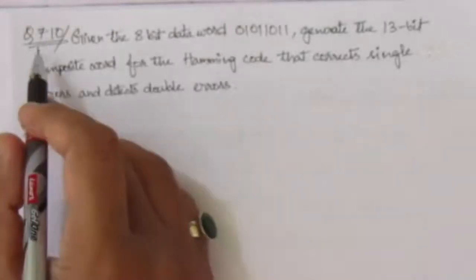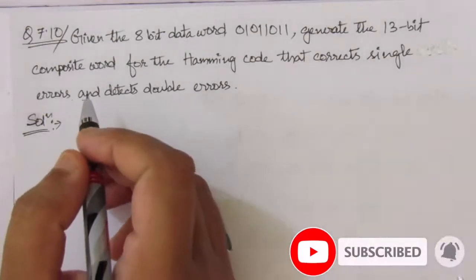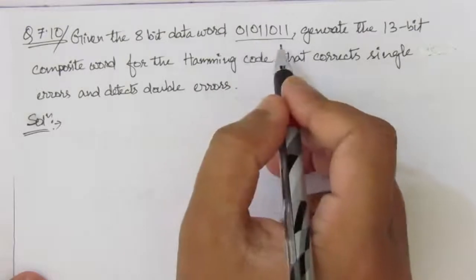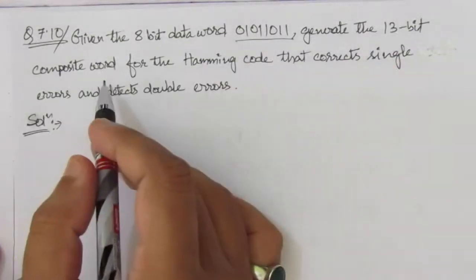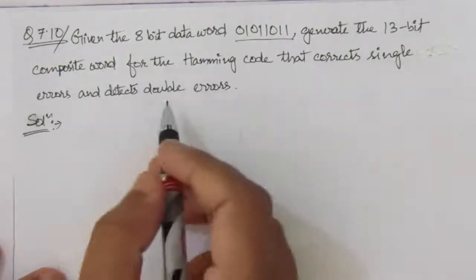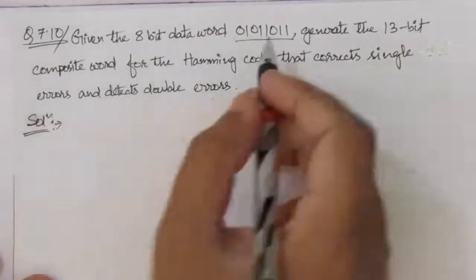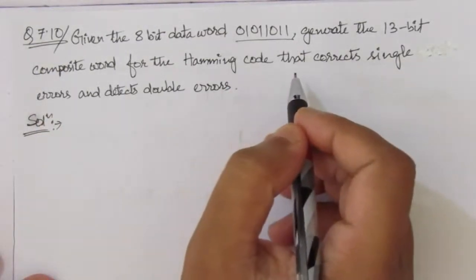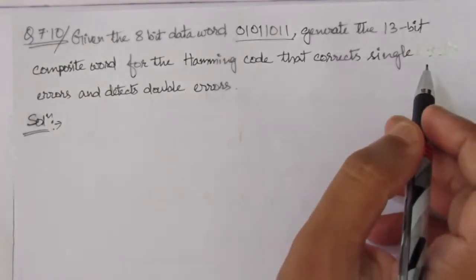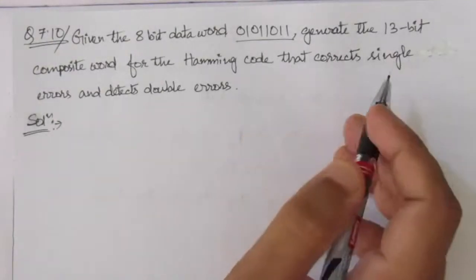In this video we will see the solution of problem number 7.10 from chapter number 7. The problem is: given the 8-bit data word, we have to generate the 13-bit composite word for the Hamming code that corrects single errors and detects double errors. So we have to generate the 13-bit composite word for this 8-bit data word.